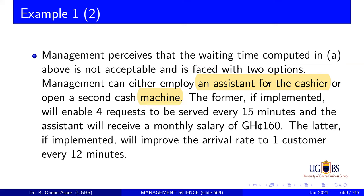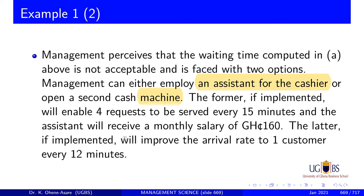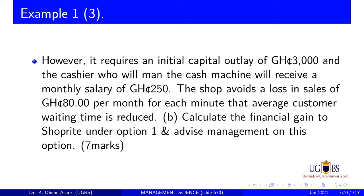Now this is where it gets interesting — you have to calculate both at the same time. The former, that is the assistant, if implemented, would enable four requests to be served every 15 minutes. Remember, the human being — if a new human being is added, it will affect the service rate, and that's what we are seeing here. The assistant will receive a monthly salary of 160 Ghana cedis. The latter, if applied, will improve the arrival rate to one customer every 12 minutes.